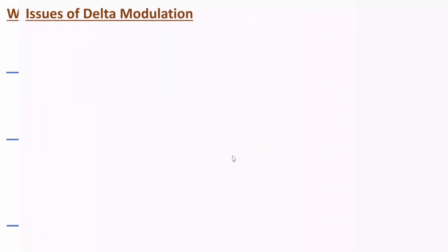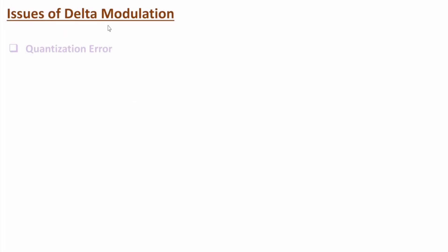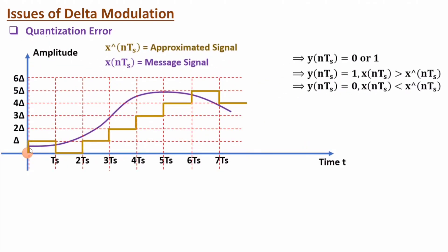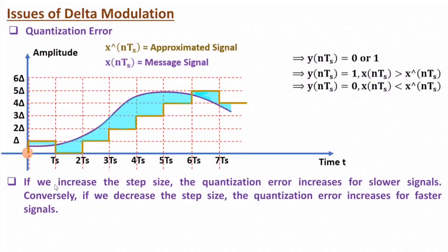Now let me explain the issues of delta modulation. The first issue is quantization error. The difference between the message signal and the approximated signal is the quantization error. If you want to reduce this quantization error, you need to observe step size. If you increase step size, quantization error will increase for slower signals. If you decrease step size, quantization error will increase for faster signals. Another solution is to increase the sampling rate, though that will increase the bit rate of modulation.